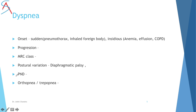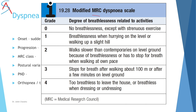In dyspnea, first ask about the onset. If sudden, think of pneumothorax or inhaled foreign body causing obstruction. If insidious — slow and gradual — consider anemia, pleural effusion, or COPD. Also ask about progression, and specifically mention the MRC (Medical Research Council) dyspnea scale.